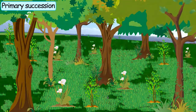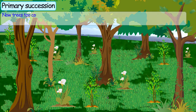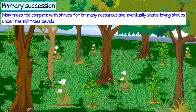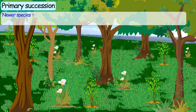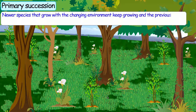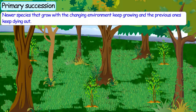Shrubs provide better shade to the seedlings to develop. And ultimately, trees grow there. Trees too compete with the shrubs for resources, and eventually shade-loving herbs and shrubs under the tall trees develop. The rest of the plant species die out. Newer species that grow with the changing environmental conditions keep growing, and the previous ones keep dying out.